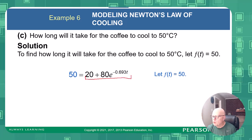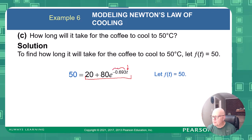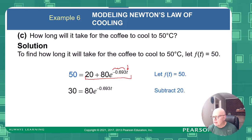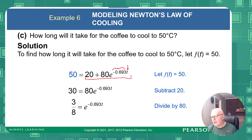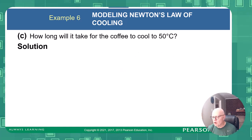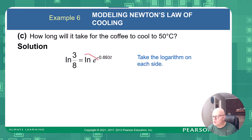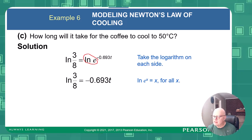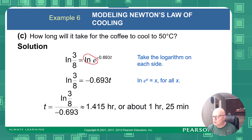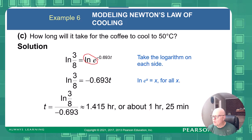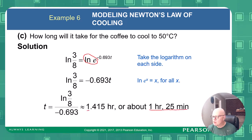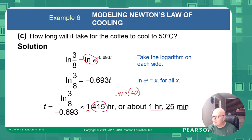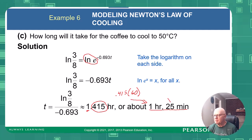Now, how long until the coffee cools to 50 degrees? Set f(t) equal to 50 in the model. Subtract 20, divide by 80, and take the natural logarithm of both sides. We get ln(30/80) equals -0.693t. Divide both sides by -0.693 to solve for t, giving approximately 1.415 hours — about 1 hour and 25 minutes. To get the 25 minutes: take the 0.415 fractional hour and multiply by 60 minutes per hour.